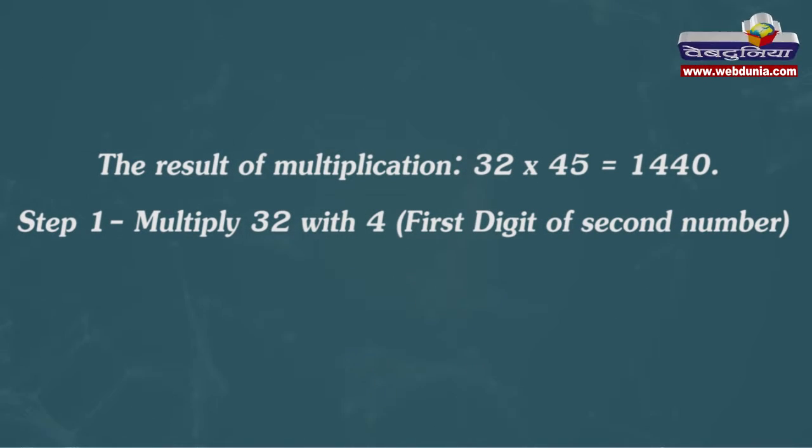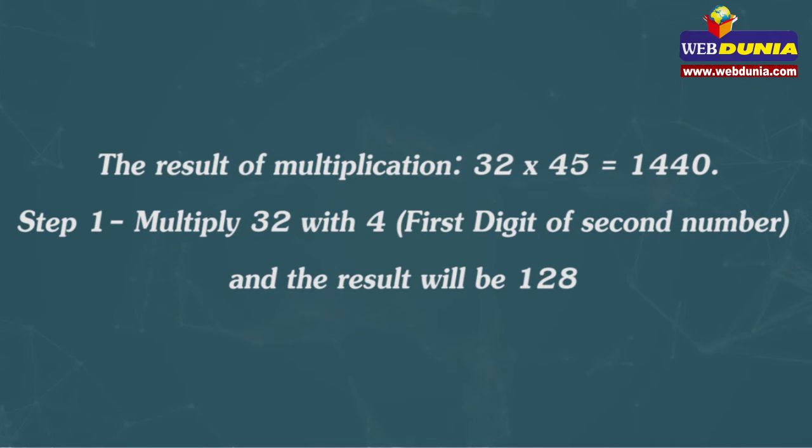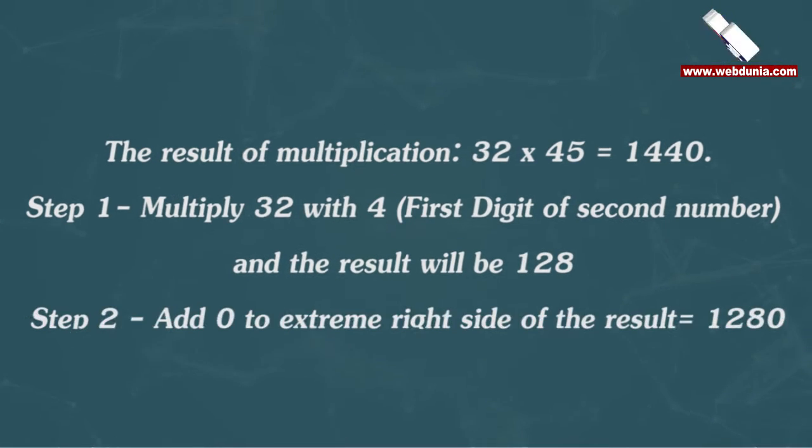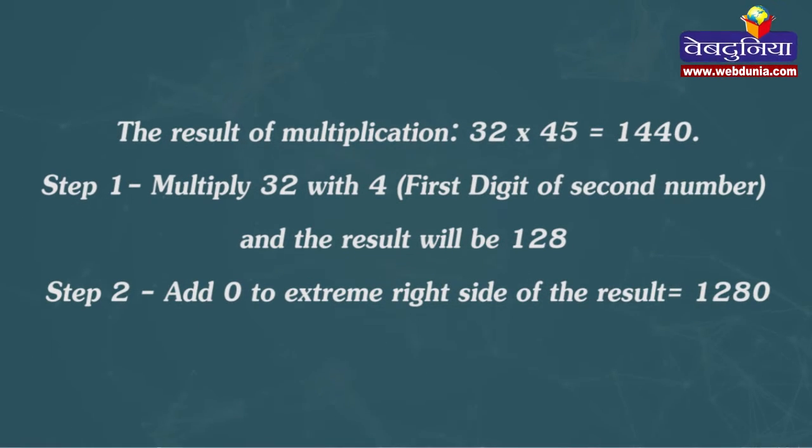Multiply 32 with 4, first digit of second number, and the result will be 128. Step 2: Add 0 to extreme right side of the result equals 1280.